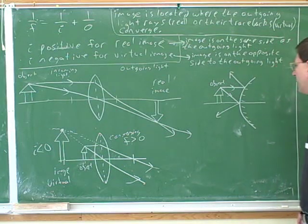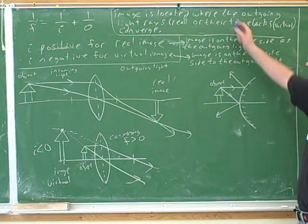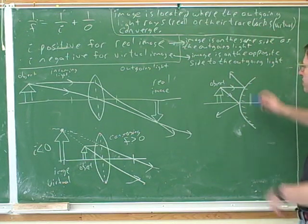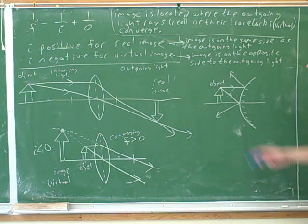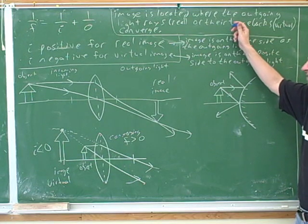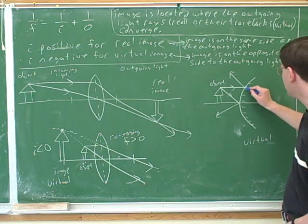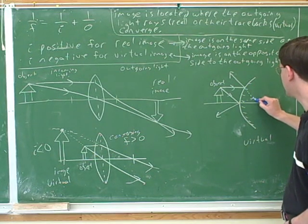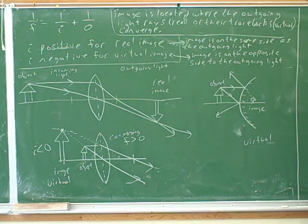Going back — how do we know this is going to be a virtual image? Is the image going to be where the outgoing light rays converge, or where their tracebacks converge? If you look at the outgoing light rays, these are never going to converge. So we're going to have to use the tracebacks. That's the first sign your guess was right — this will be a virtual image. Here are the tracebacks, and the image must be here.